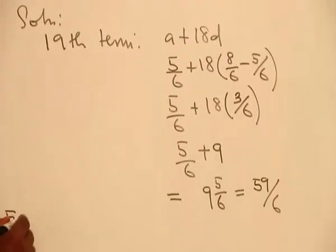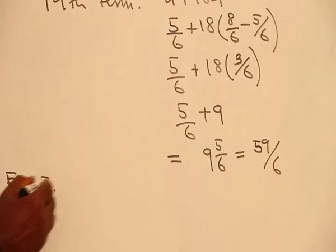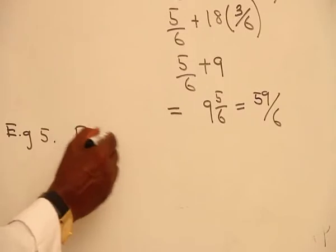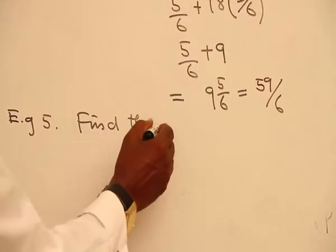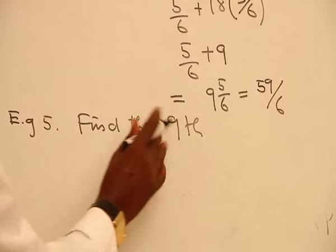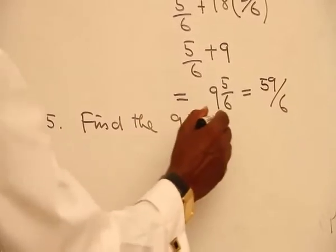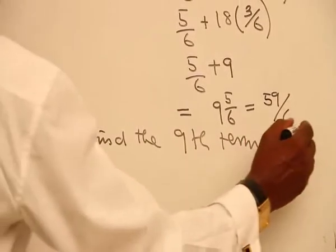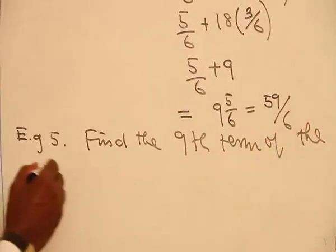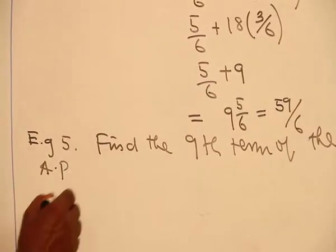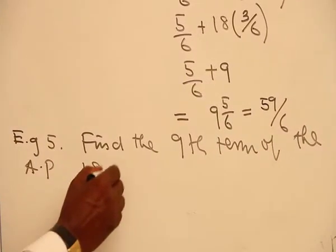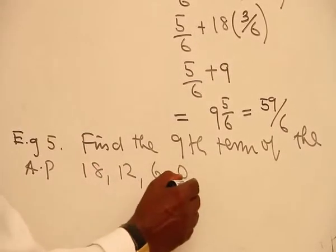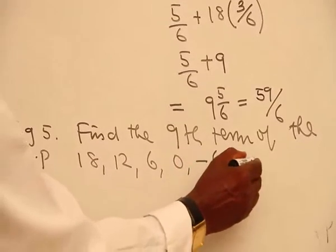Another example. Example 5: It says you should find the 9th term of the AP 18, 12, 6, 0, minus 6, etc.